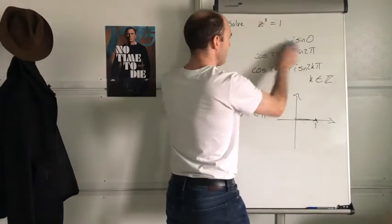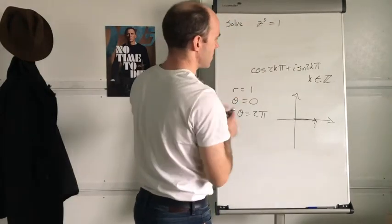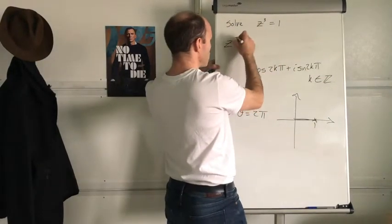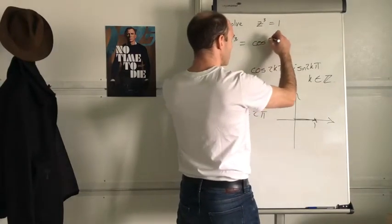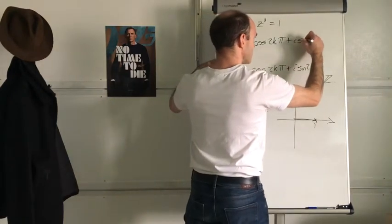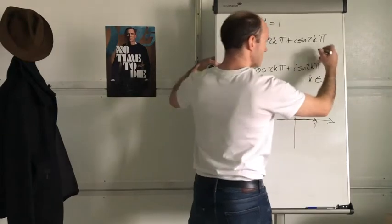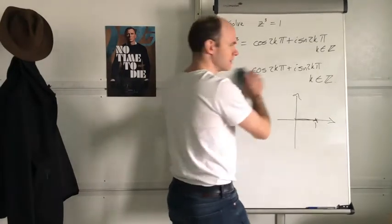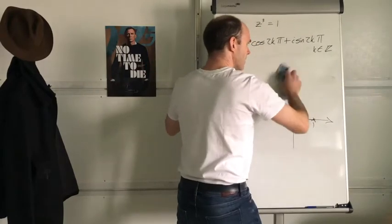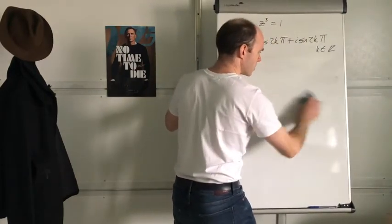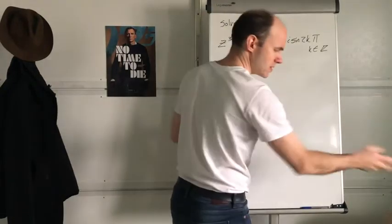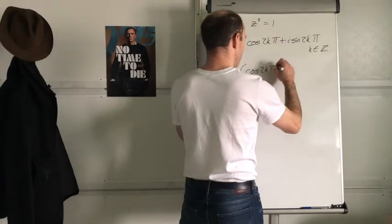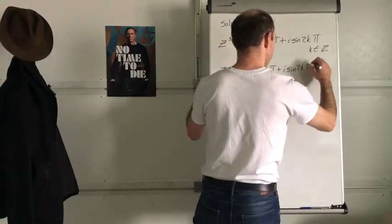So what am I going to do? That means the number 1 is exactly the same as cos 2kπ + i·sin 2kπ. So that means z³ is exactly the same as cos 2kπ + i·sin 2kπ, where k is an integer. We need to solve what z is. You cube-root both sides, and z equals (cos 2kπ + i·sin 2kπ) to the power of one third.